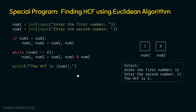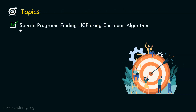We have understood how to write the program to find the HCF using the Euclidean algorithm. With this, we are done with this topic — special program: finding HCF using Euclidean algorithm. We have also completed the entire chapter on special programs. Next, we will move to the chapter on functions. I hope the chapter is completely clear and you've gained enough knowledge about these programs. Thank you for watching.